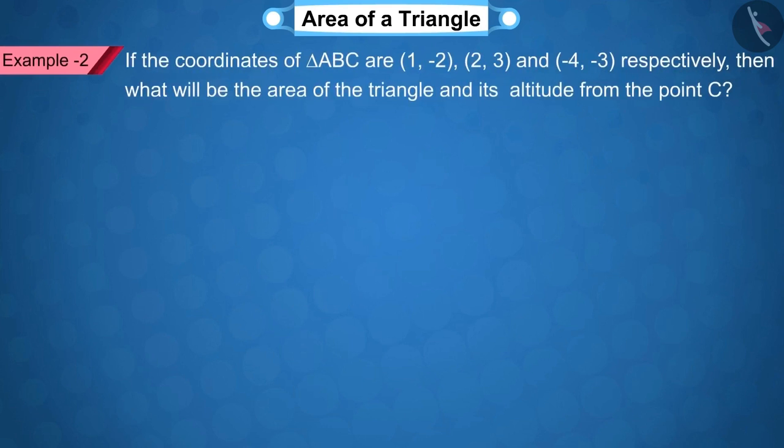Let's see another example. If the coordinates of triangle ABC are (1, -2), (2, 3) and (-4, -3) respectively, then what will be the area of the triangle and its altitude from the point C? Let's discuss this.